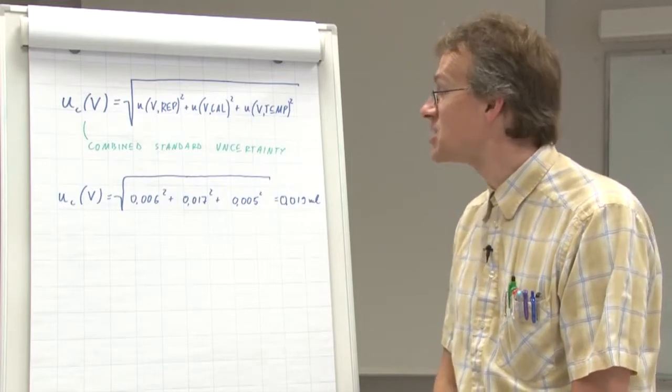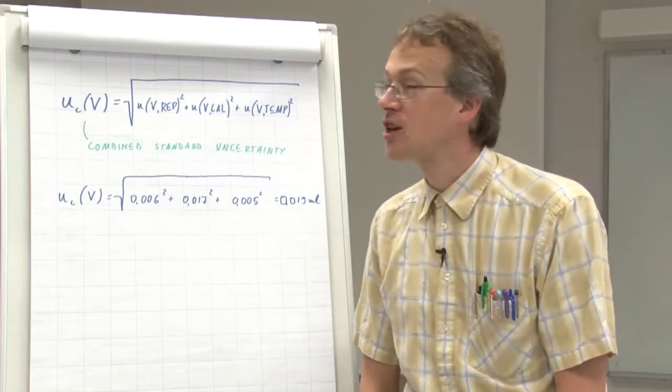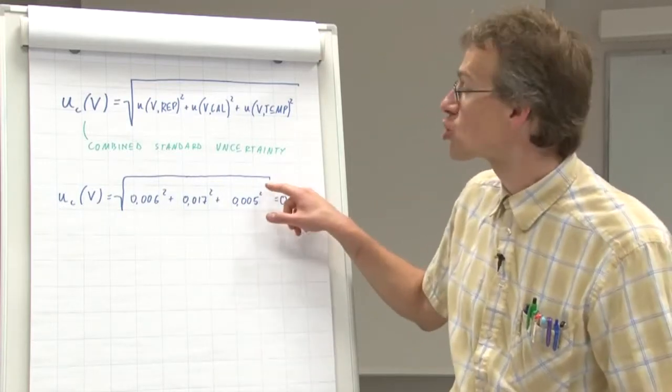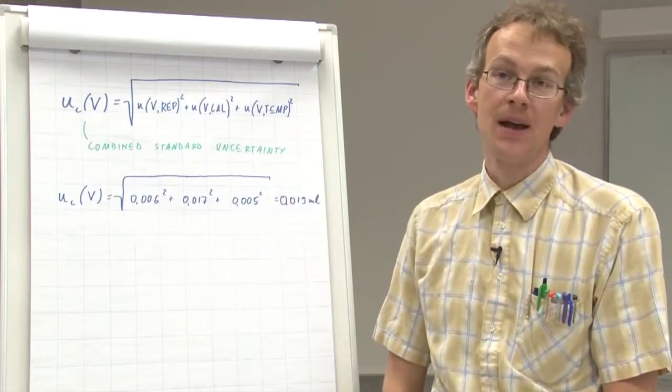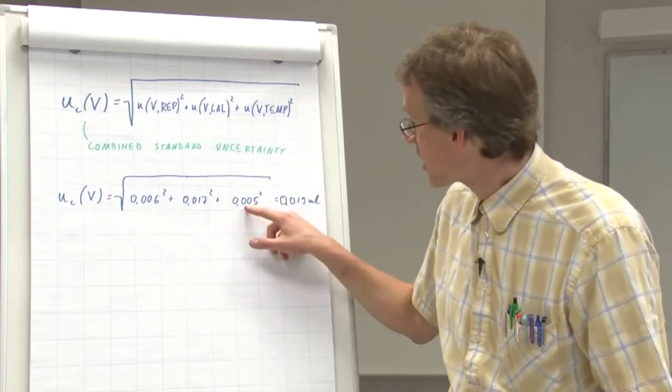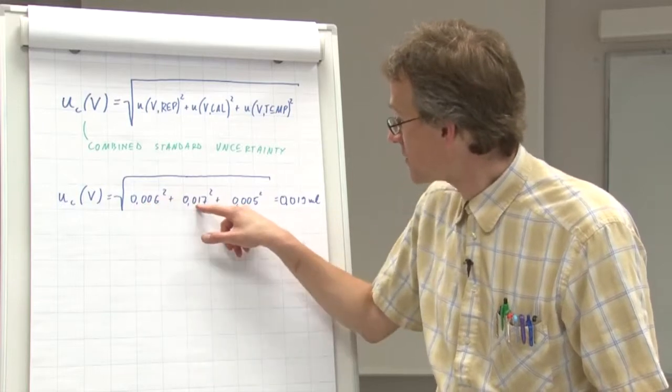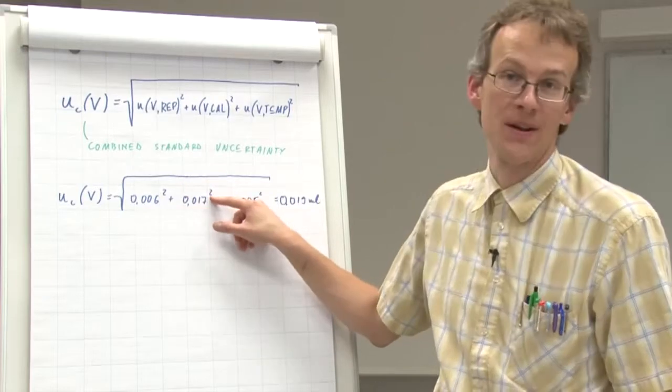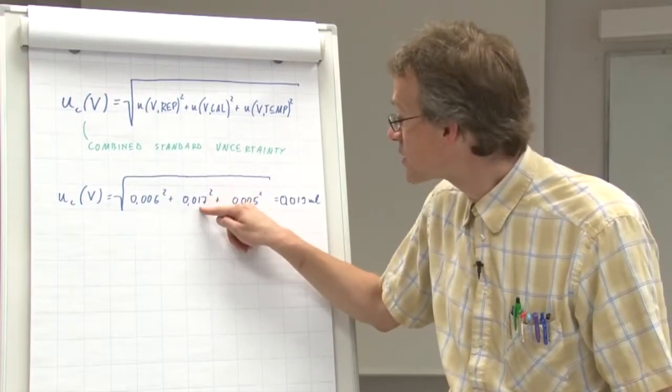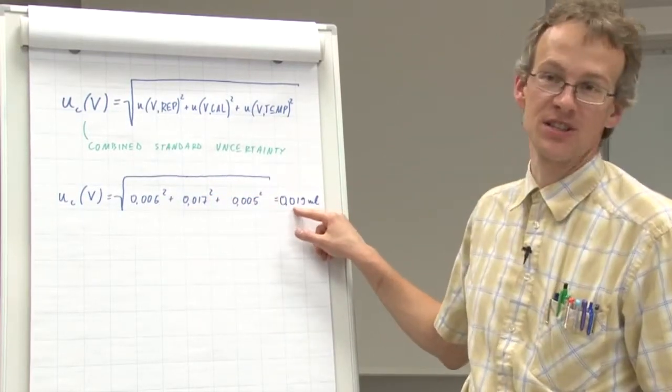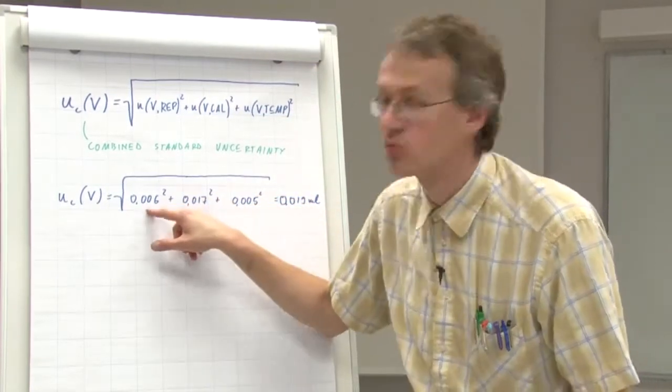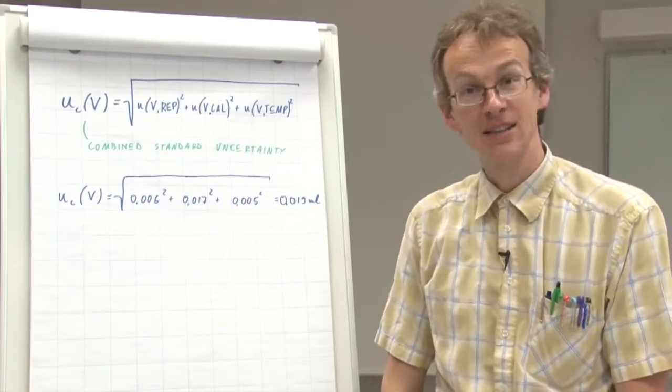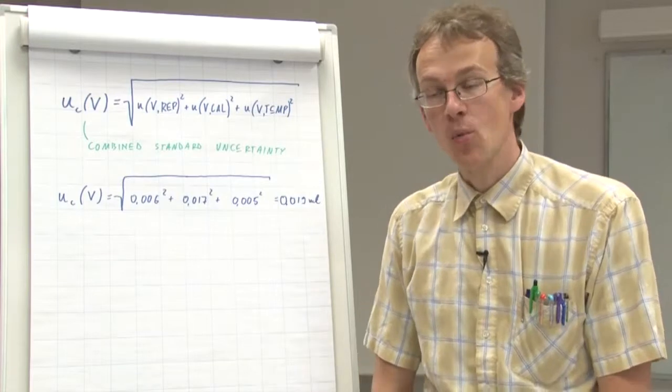And this is now the general property of this square type of summing that whenever you sum quantities of different magnitude, then the result will be often quite similar to the biggest one, meaning the biggest one will dominate in the result, suppressing the smaller ones. And this is also the reason why,